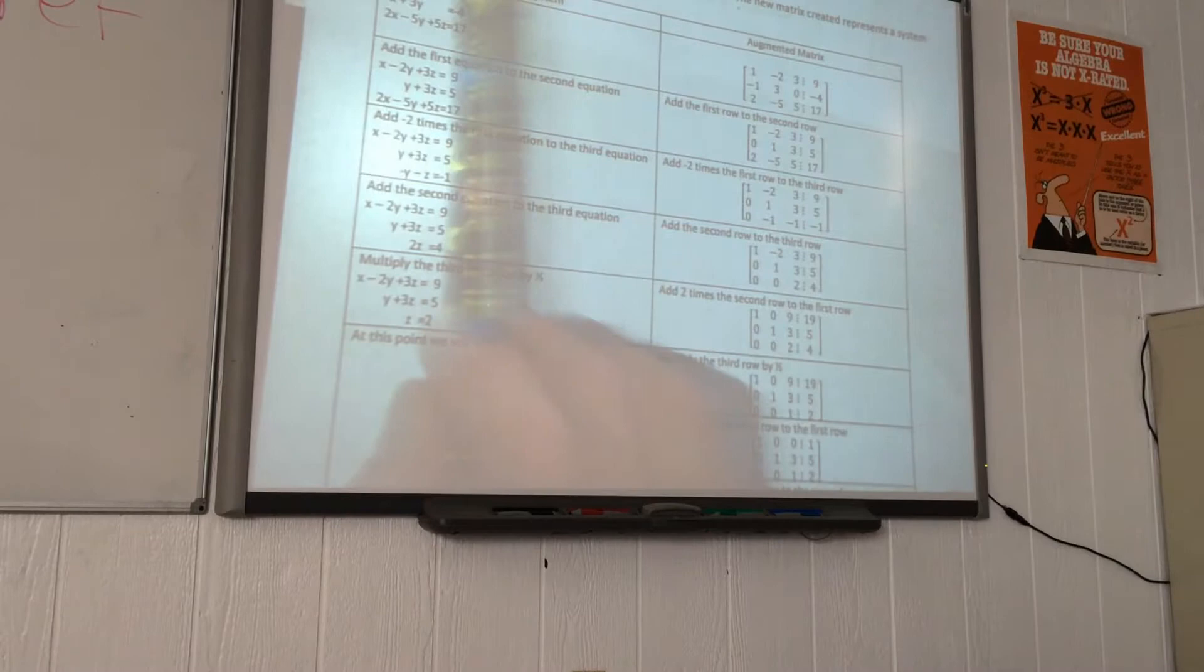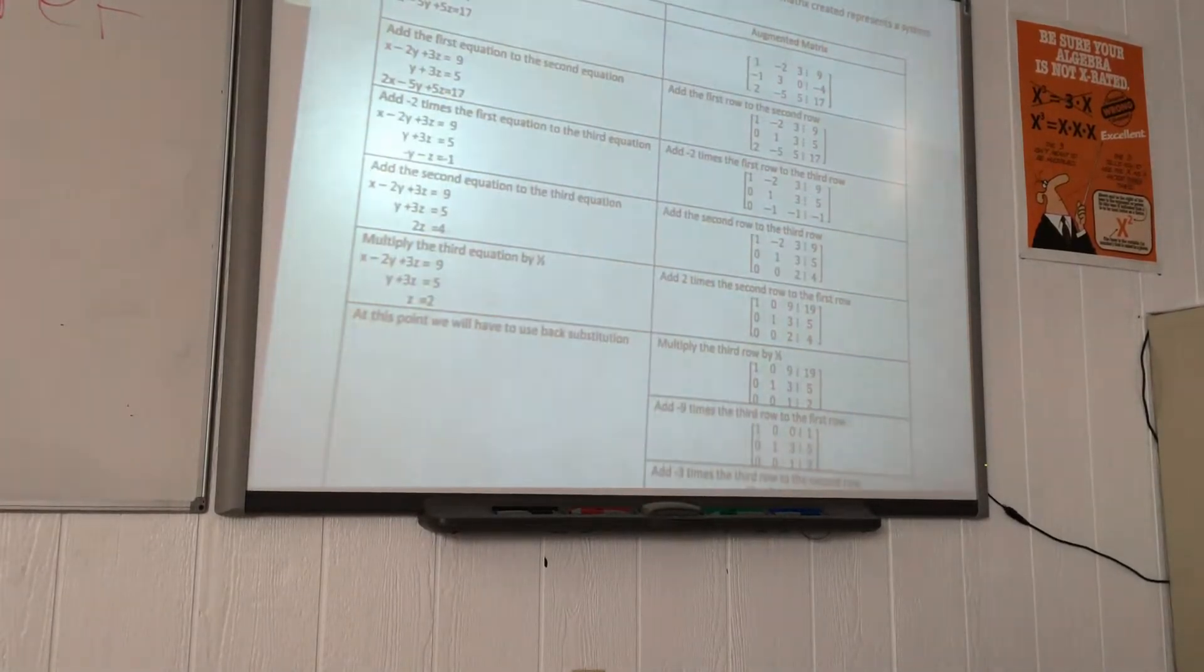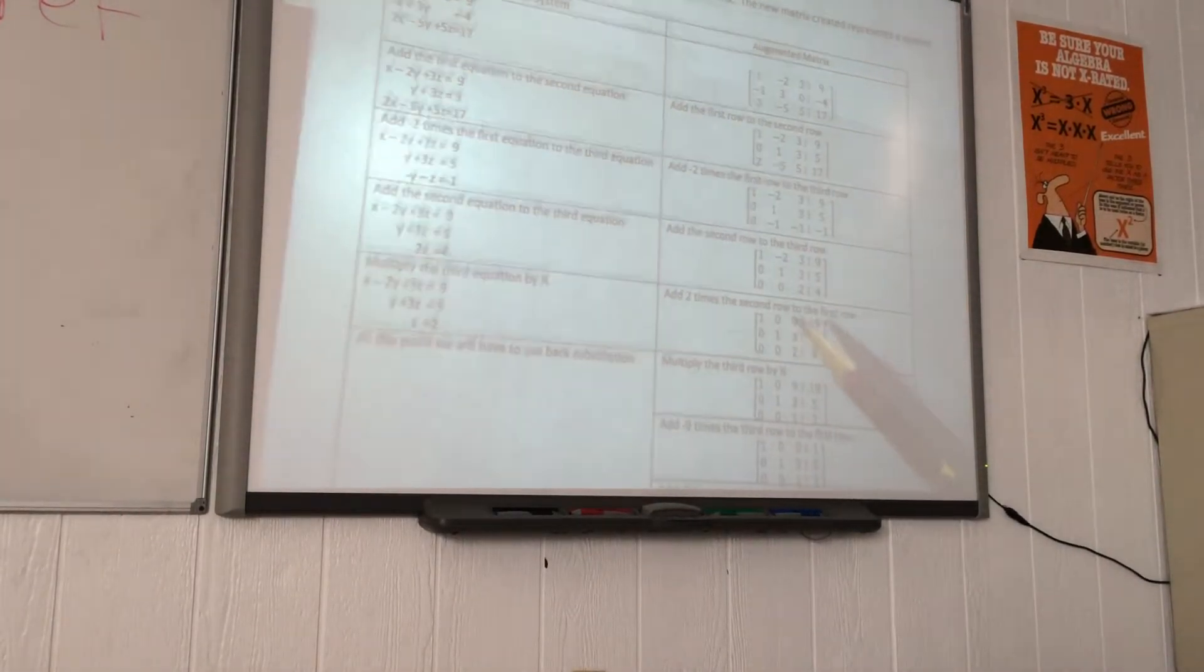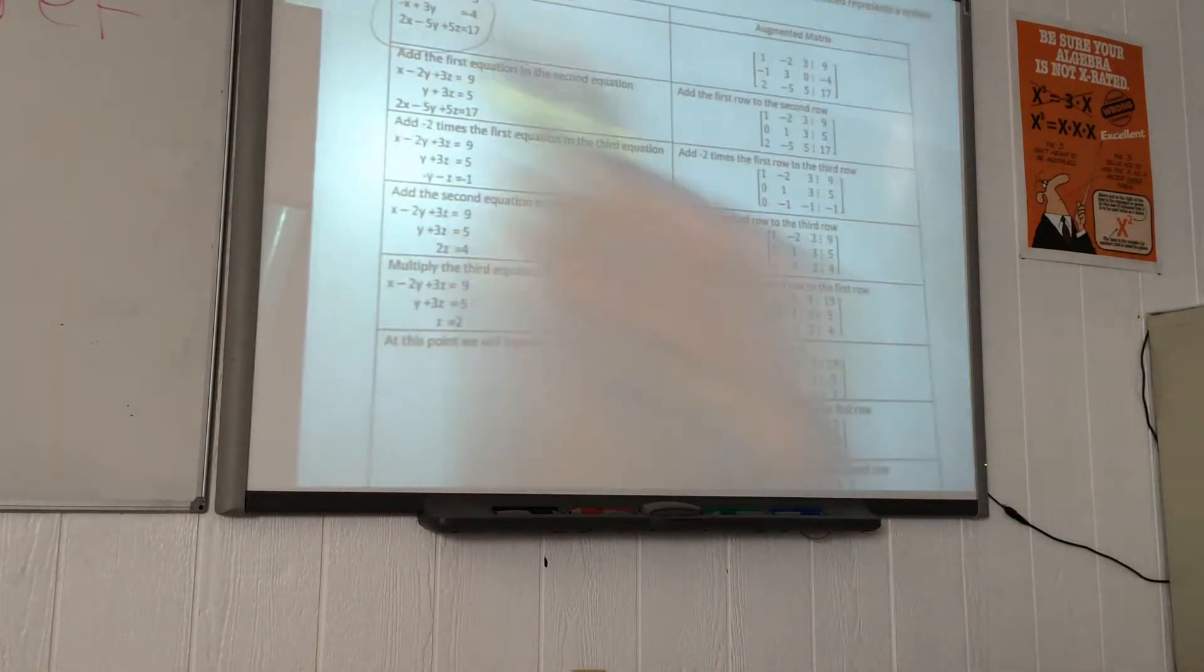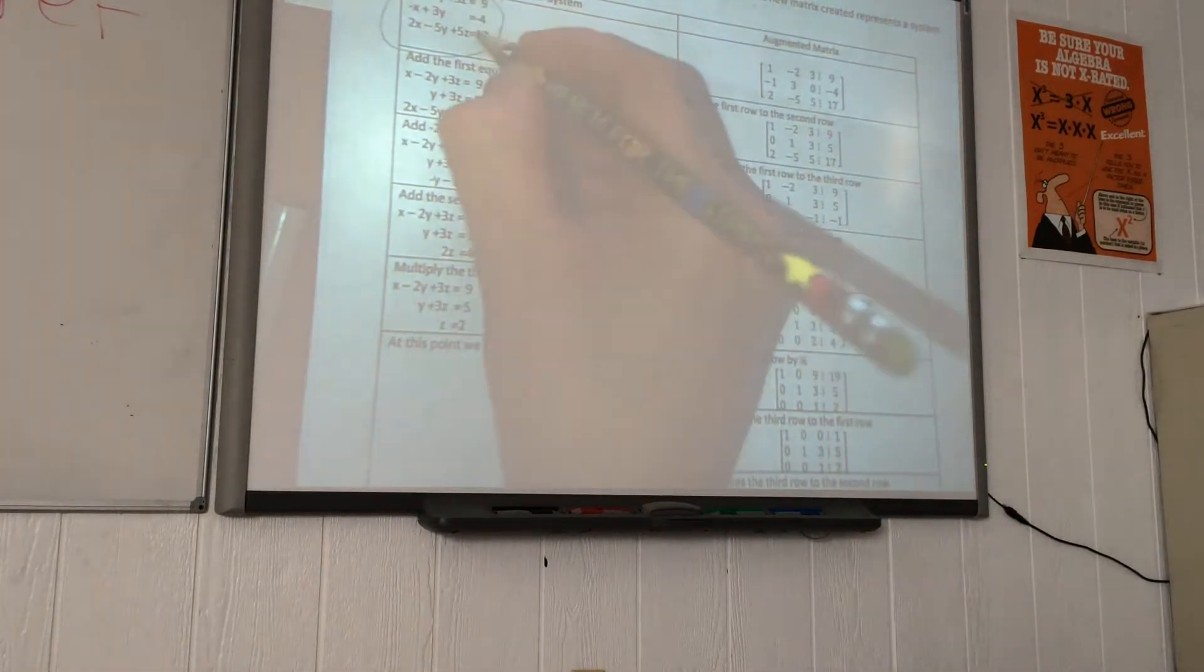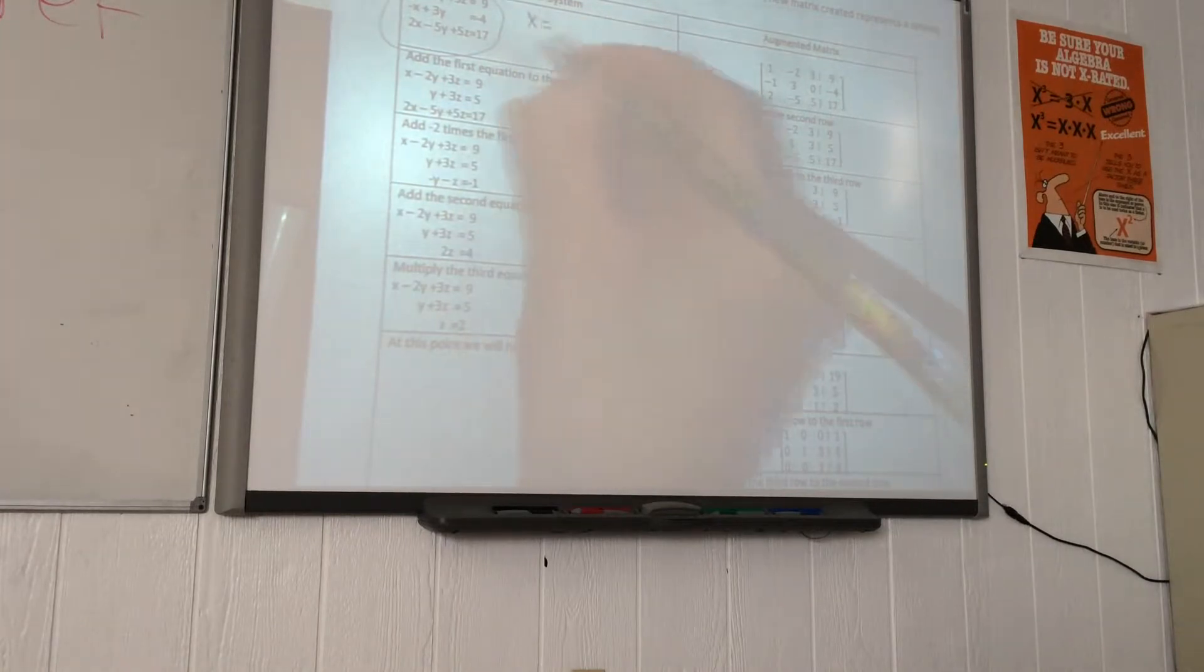Now we're going to continue with the same handout, Gauss Elimination slash Gauss Jordan. Here we have a 3 by 3 system. If you notice, we have 3 equations and 3 variables: X, Y, and Z.